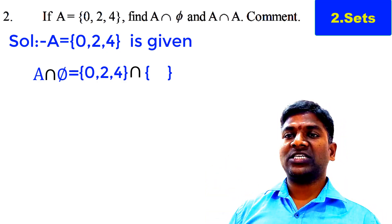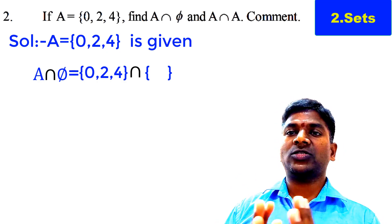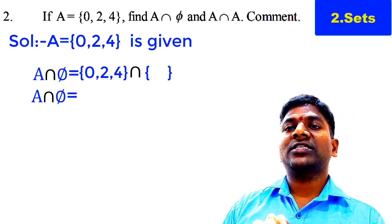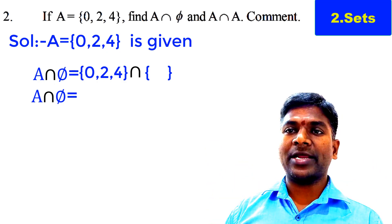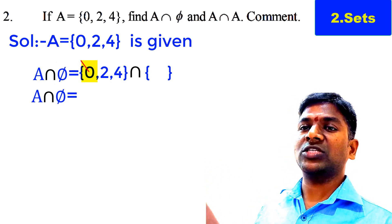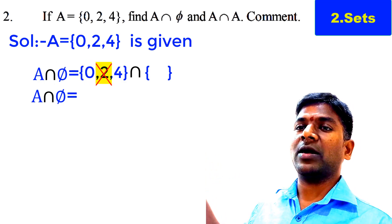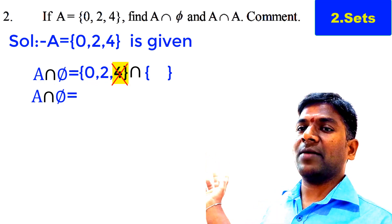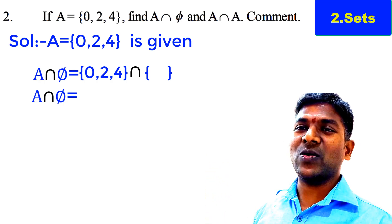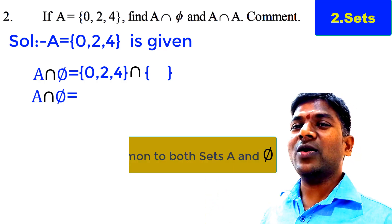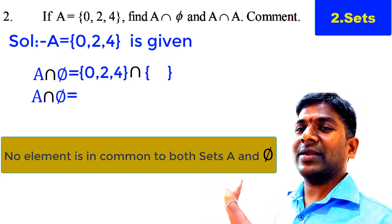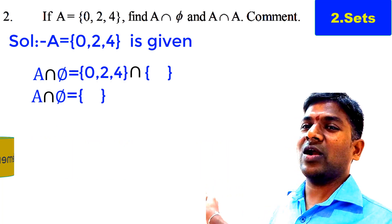A intersection ∅ means the common elements of Set A and the empty set. Observe: 0 is only in Set A but not in the empty set; 2 is in Set A but not in the empty set; 4 is in Set A but not in the empty set. There are no common elements to Set A and the null set, so finally A intersection ∅ = ∅.